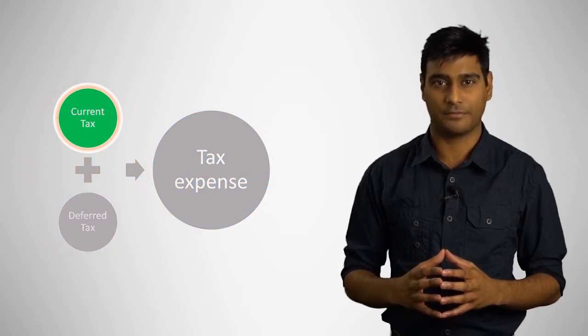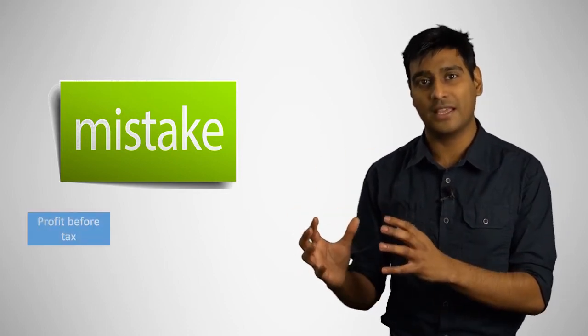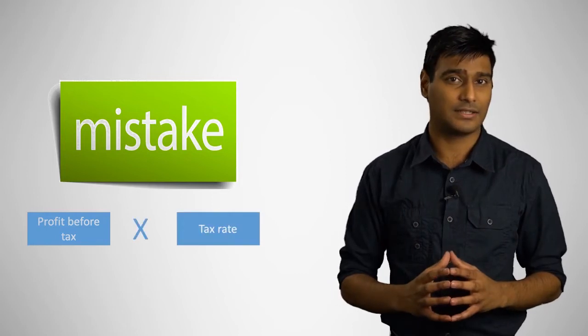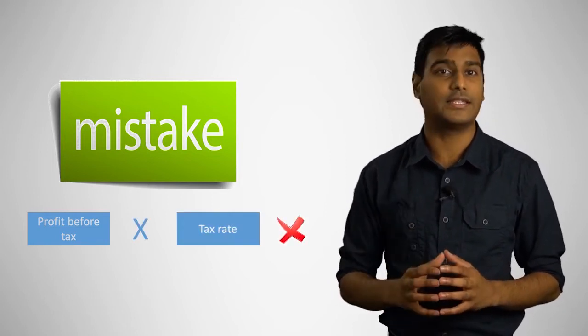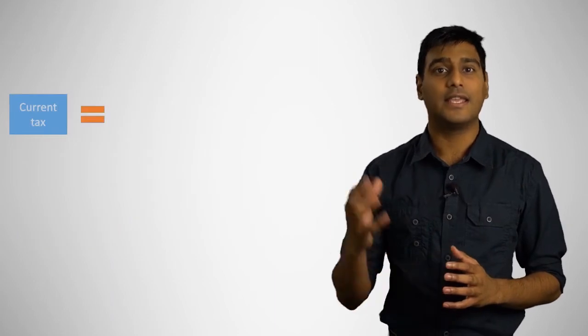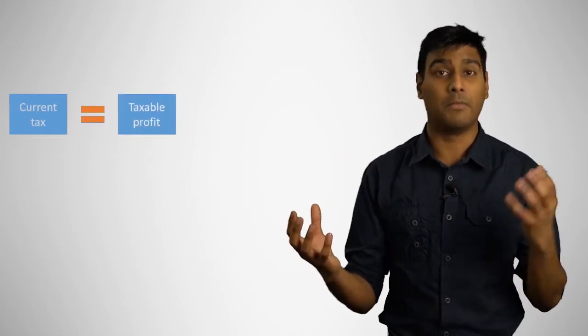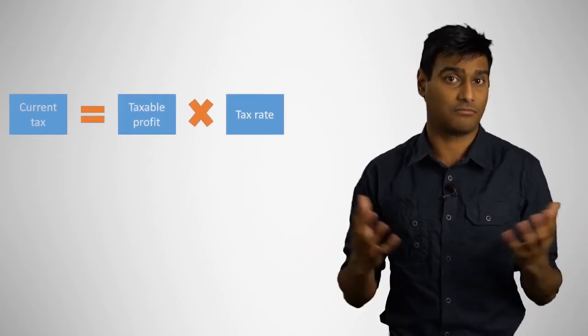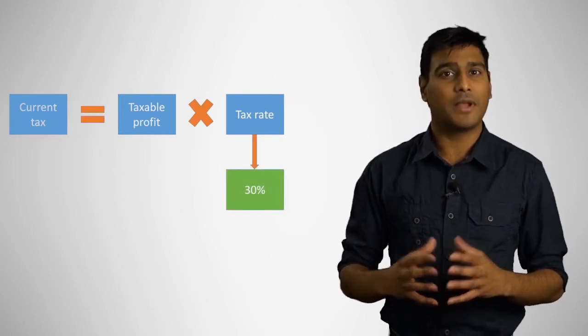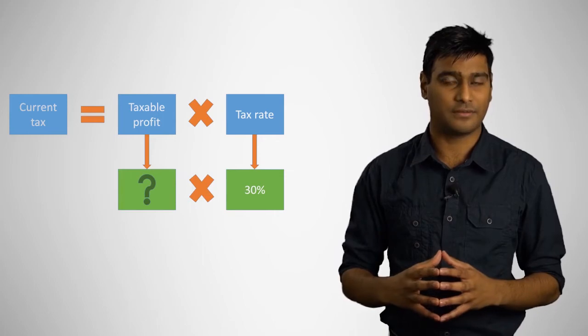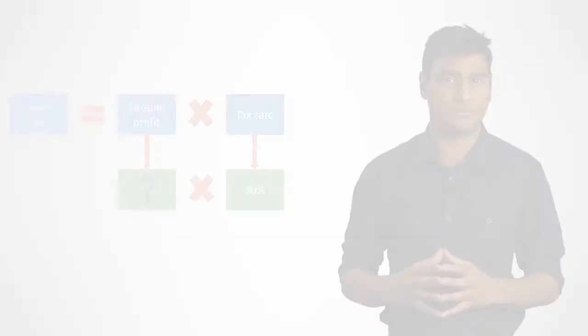The calculation of current tax expense will be the focus of this clip. A common mistake when calculating the current tax expense is to simply take accounting profit before tax and multiply it by the tax rate. This is not correct. The formula for calculating current tax is taxable profit multiplied by the tax rate, which in most cases is 30%.